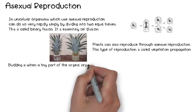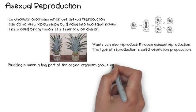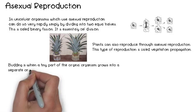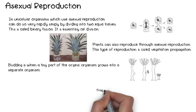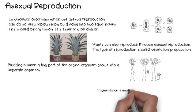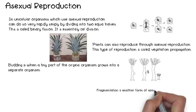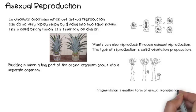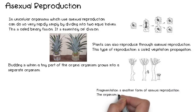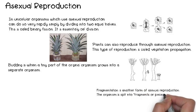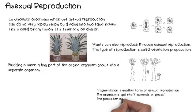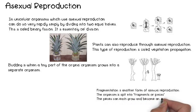Then there's budding. Budding is when a tiny part of an original organism grows into a separate organism — it just pops off. For example, this hydra: that little piece there became a new one. Yeast is a great example of budding as well. Then there's something called fragmentation, another form of asexual reproduction. The organism is split into fragments or pieces, and these pieces can then grow and become a separate organism.